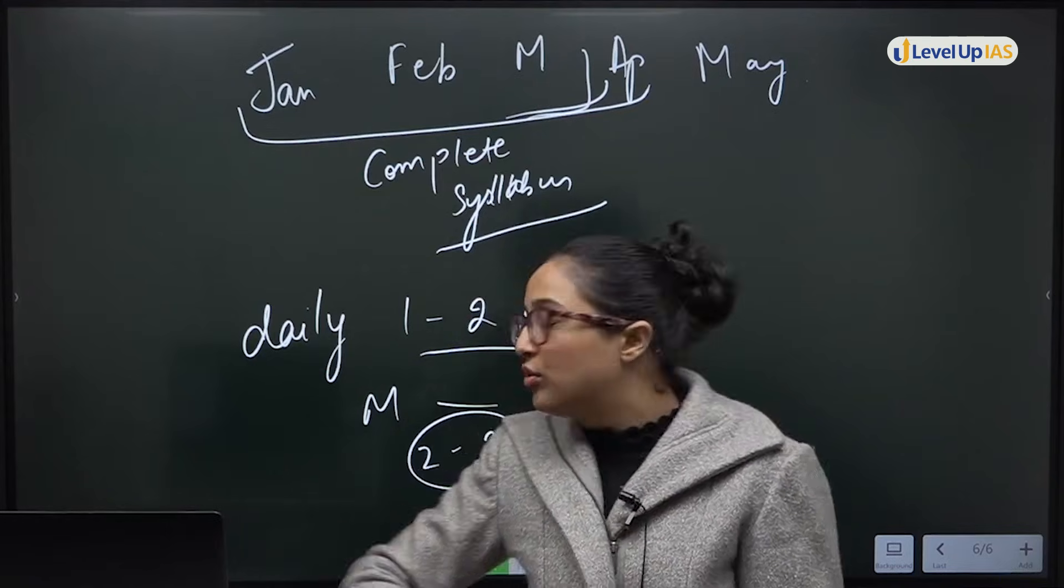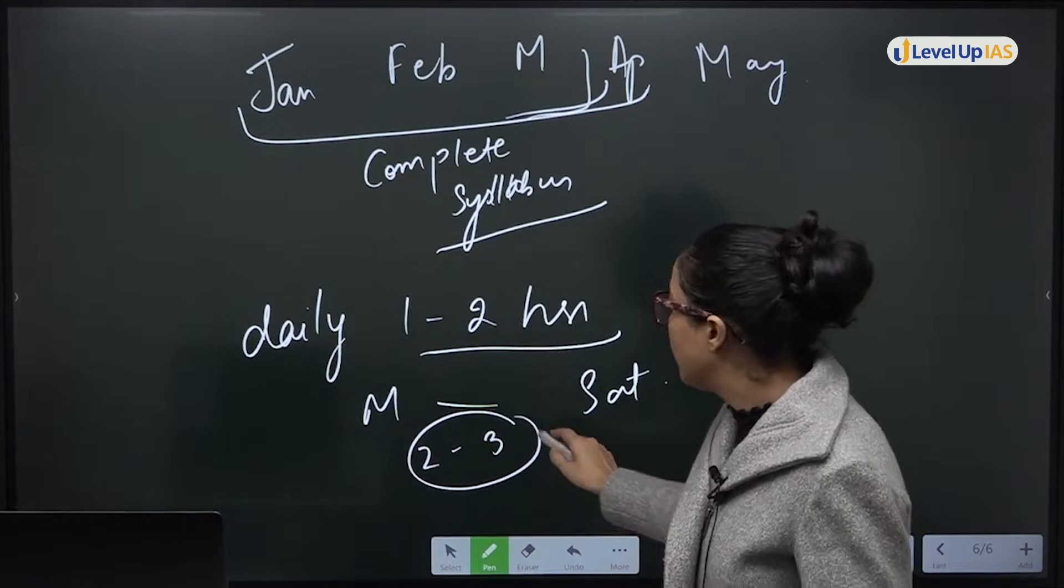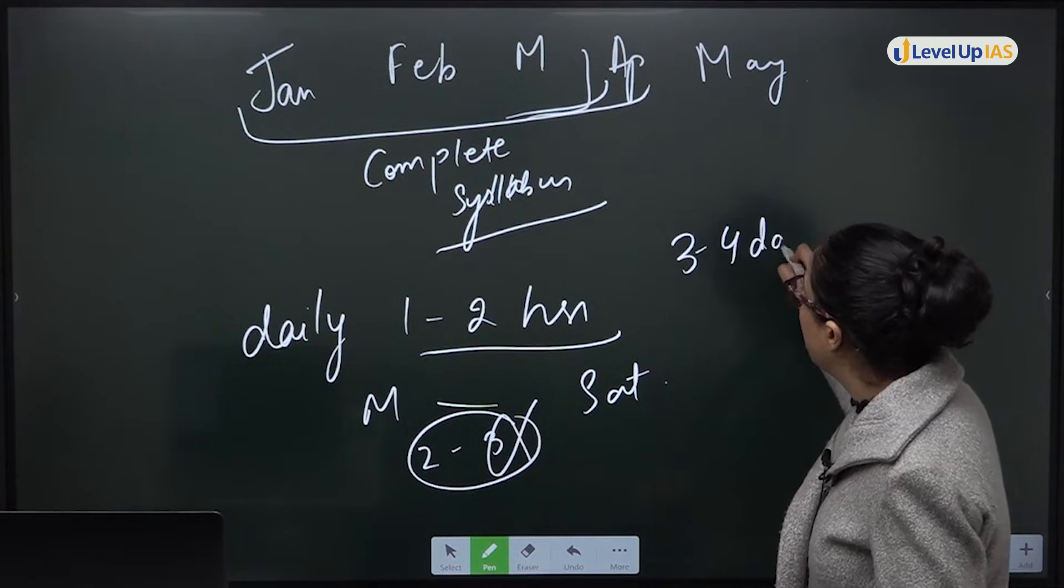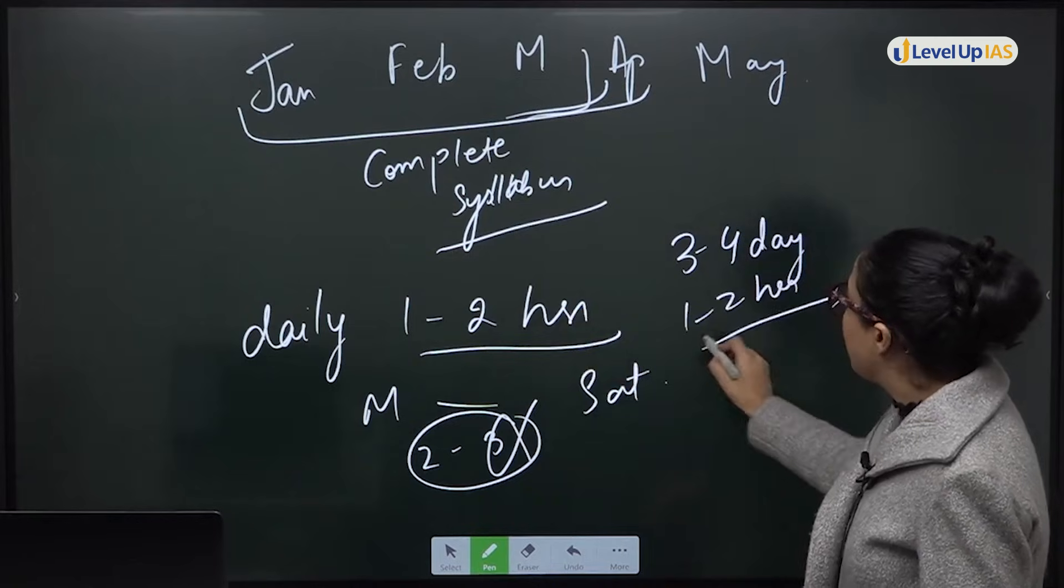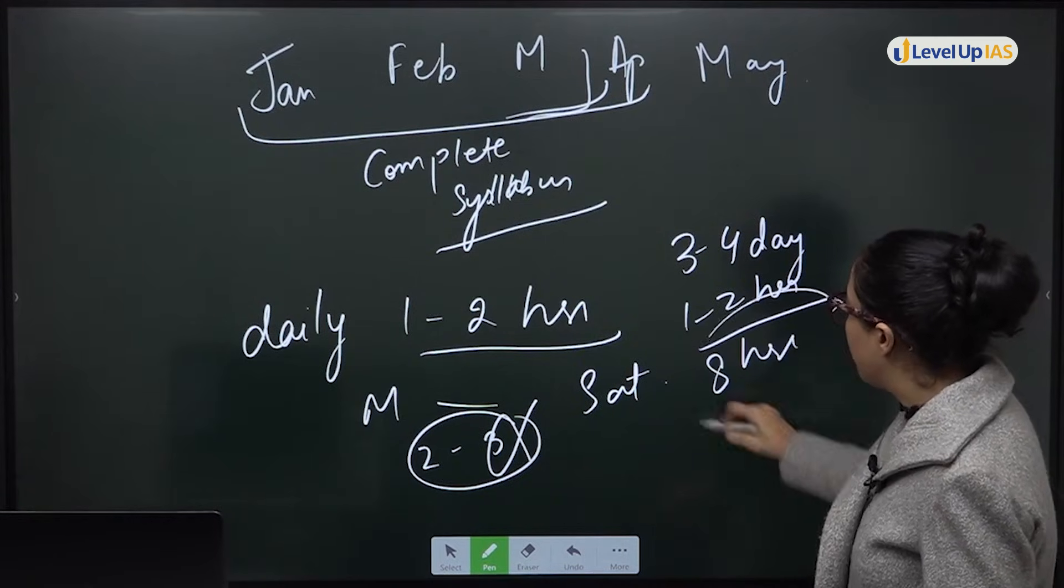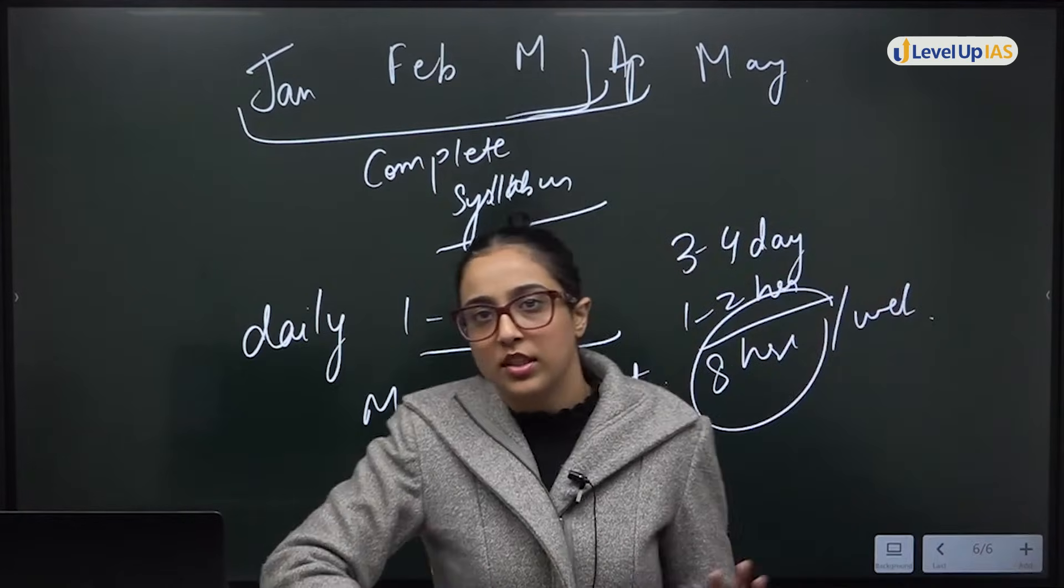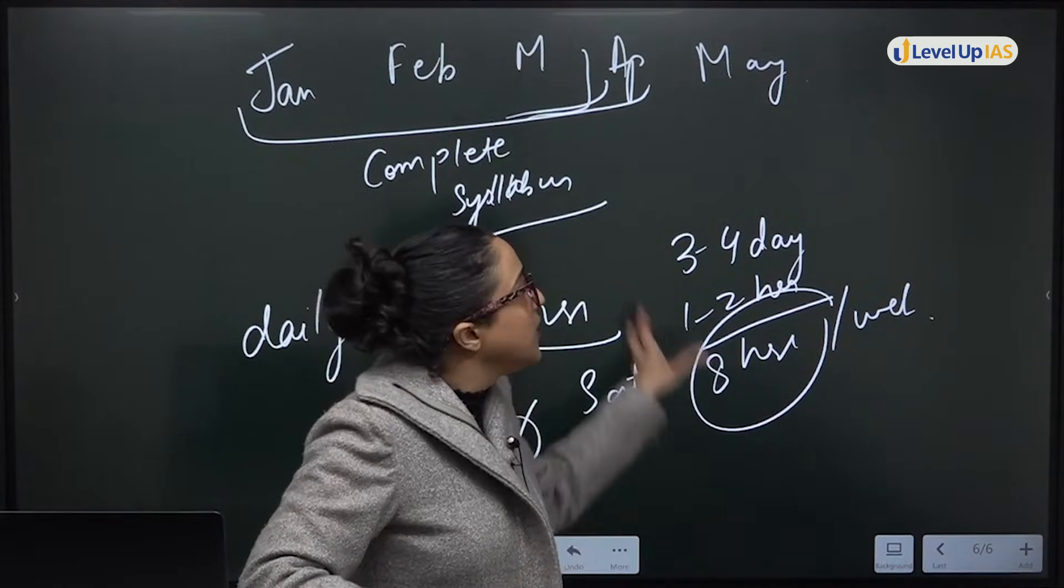So what you do is, you do not study for two to three days. So if you study for three to four days, you are studying what? One to two hours. That means you do maximum eight hours of preparation per week. This will not work. Eight hours per week will not work for CSAT. You have to complete your syllabus.